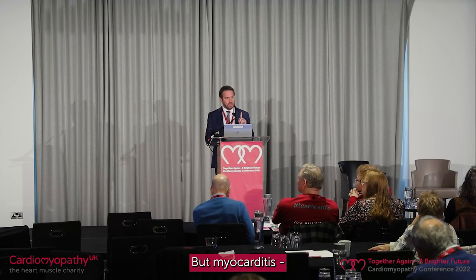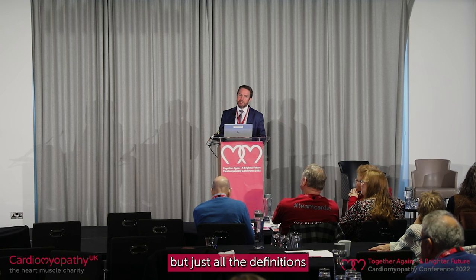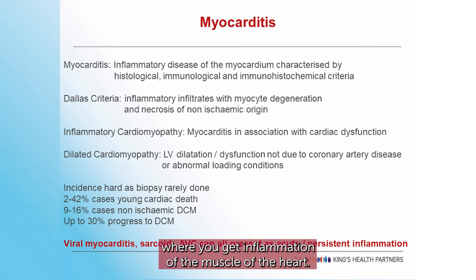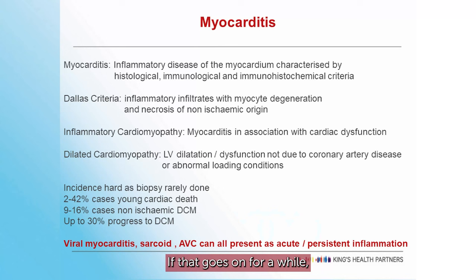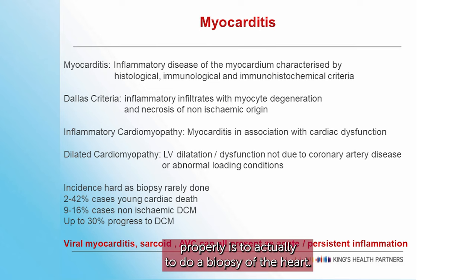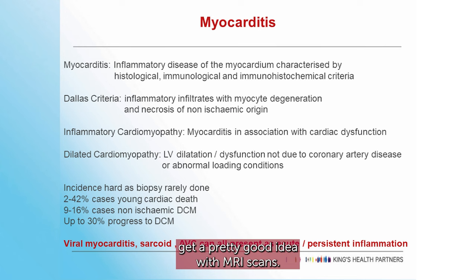Myocarditis is going on in a different room, but the definitions are quite confusing. Myocarditis is where you get inflammation of the muscle of the heart. If that goes on for a while, it can lead to a dilated cardiomyopathy. The only way to diagnose myocarditis properly is to do a biopsy of the heart, but most of the time you can get a pretty good idea with MRI scans.